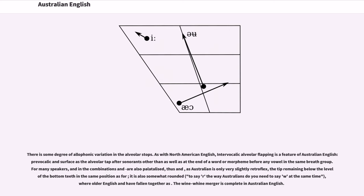There is some degree of allophonic variation in the alveolar stops. As with North American English, intervocalic alveolar flapping is a feature of Australian English: /t/ and /d/ surface as the alveolar tap after sonorants other than /l/ as well as at the end of a word or morpheme before any vowel in the same breath group.